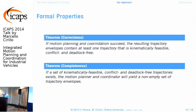Our system turned out to have formal properties we were not initially expecting, which really pleased our industrial partners. We can prove correctness and completeness. Correctness means that under certain operational assumptions, if motion planning and coordination succeed, the resulting trajectory envelopes contain at least one trajectory that is kinematically feasible and conflict- and deadlock-free — so whatever comes out of our system will be executable, and we will know in advance if it is not. If a deadline will not be met or there is a risk of deadlock, we will know beforehand.